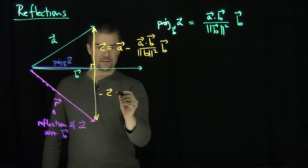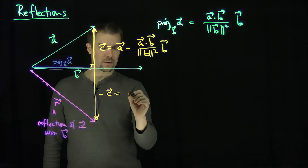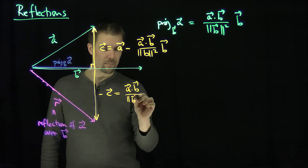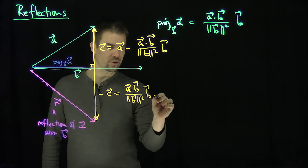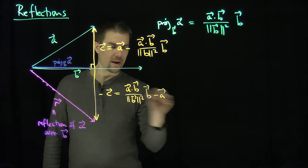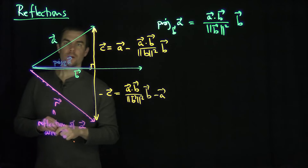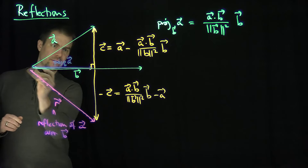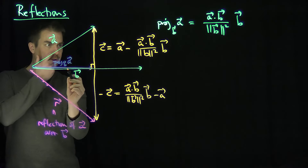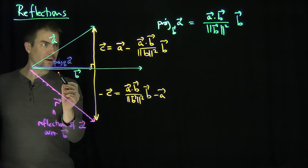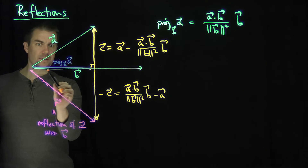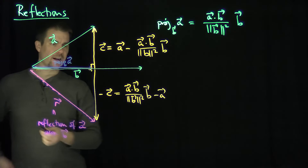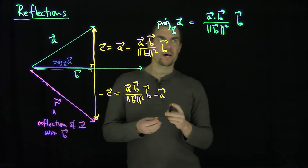Therefore I have a formula for negative c — it's going to be the opposite of c: a·b over the length of b squared times b, minus a. Now what do we know? We know this reflection vector r is the sum of these vectors: projection of a onto b, plus this vector negative c. So I'm going to add these vectors together.